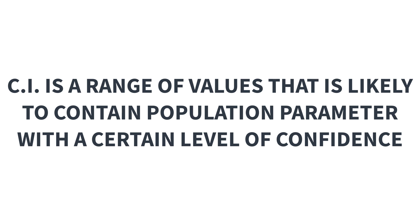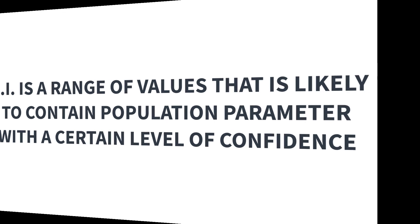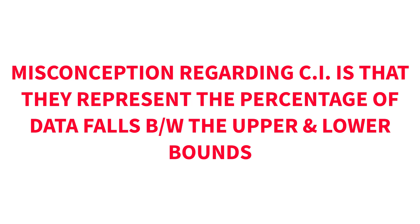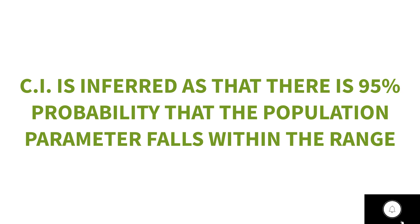Analysts often use confidence intervals at 90%, 95%, or 99% confidence level for various statistical measures such as mean, standard deviation, variance, etc. So if the point estimate for the height of women in India has a 95% confidence interval of 5 feet 2 inches to 5 feet 6 inches, it can be inferred that there is a 95% probability that the population mean falls within that range. There is a common misconception that confidence intervals represent the percentage of data from a given sample that falls between the upper and lower bounds — this is incorrect. It should be inferred as there is a 95% probability that the population parameter falls within that range.